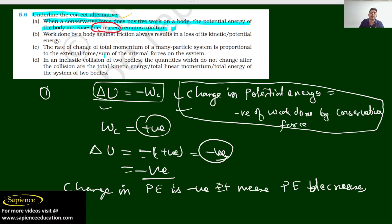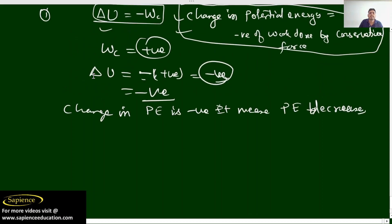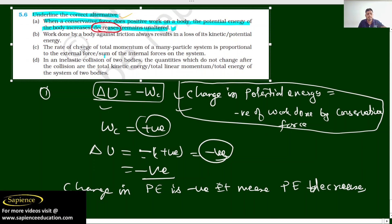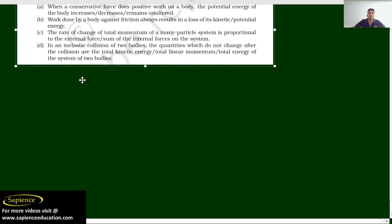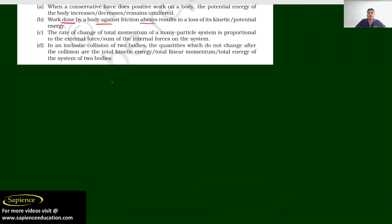Now let us discuss the second part, that is B. Work done by a body against friction always results in a loss of kinetic energy or potential energy. Let us consider there is an object moving and a force is being applied. The object has kinetic energy — that is half mv squared — when it is moving.